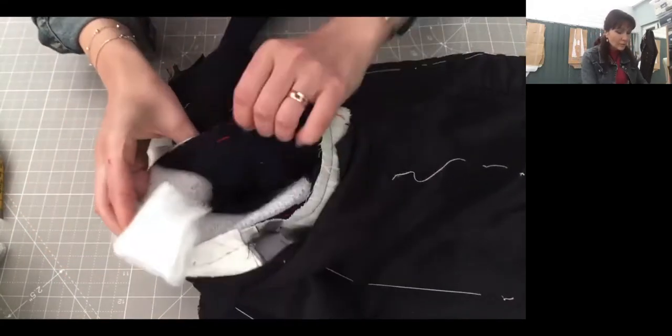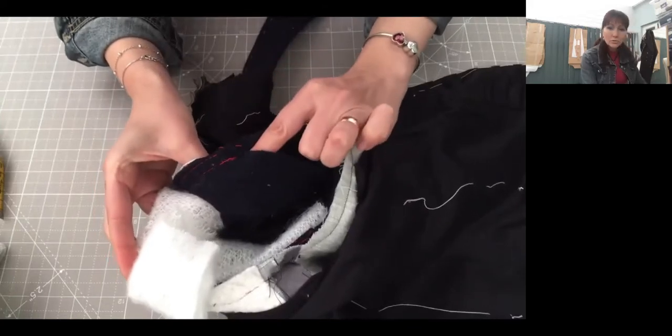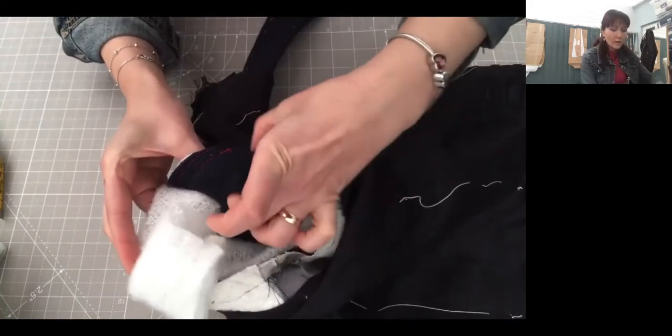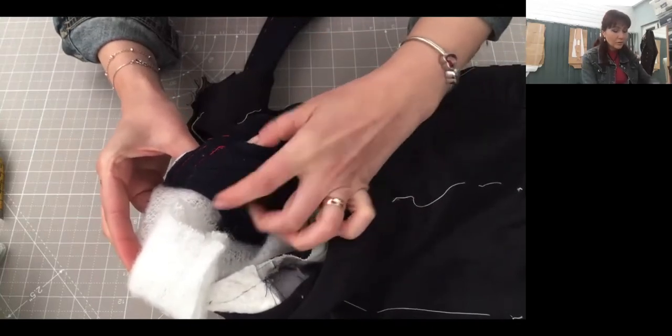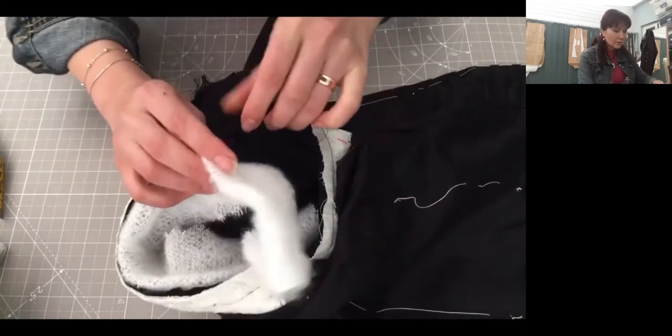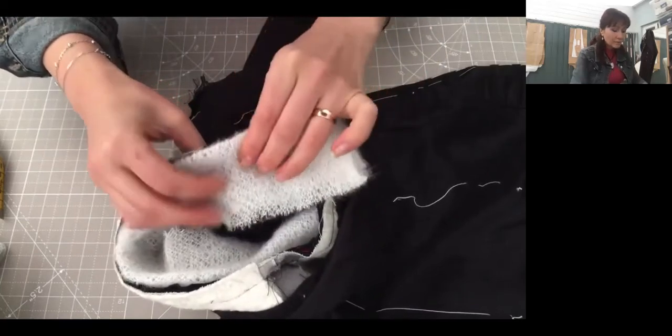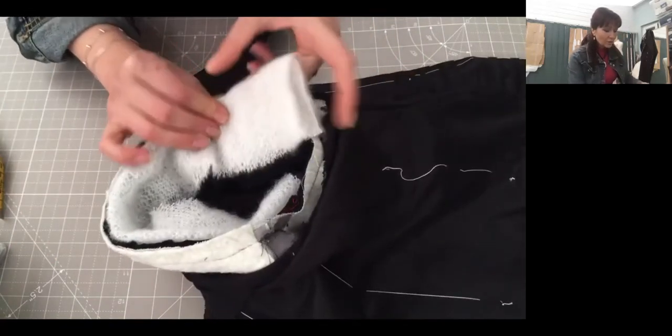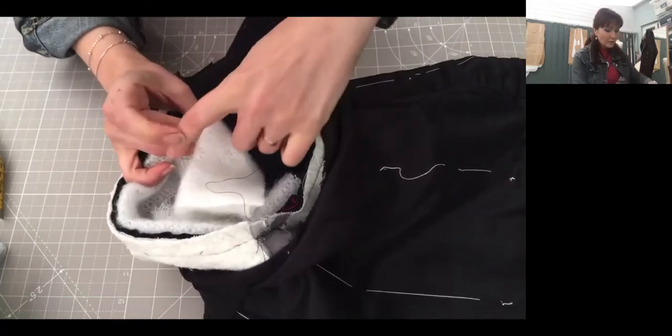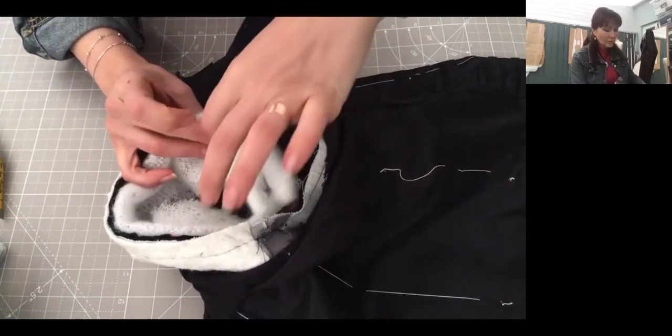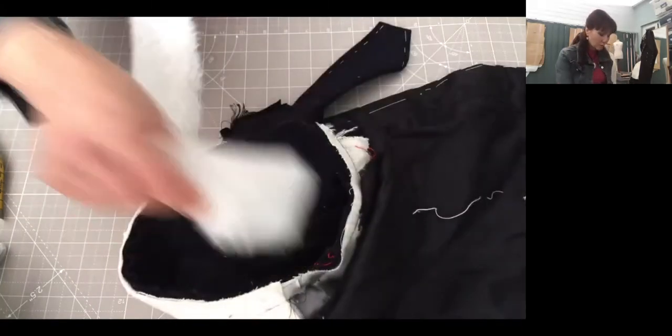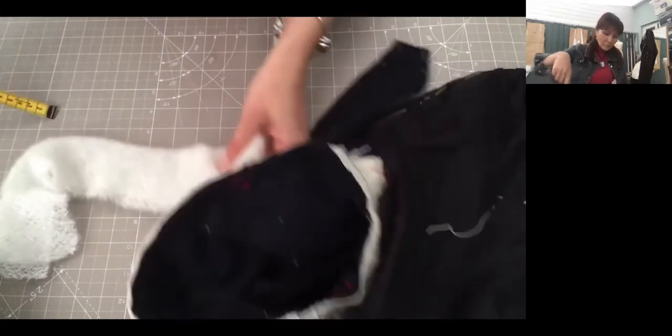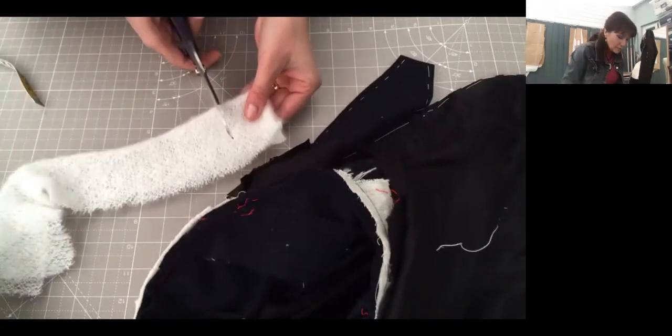And then you go to the seam allowance which is on the other side, so you've got two seam allowances there, and you go further to that one underarm to measure and find out how much you need. So where the seam allowance finished, roughly there, and I'm going to cut that away. So that's too much. I'm going to cut that.